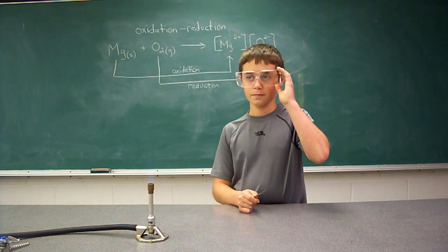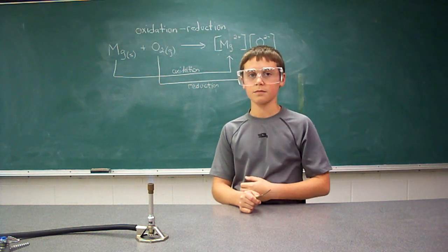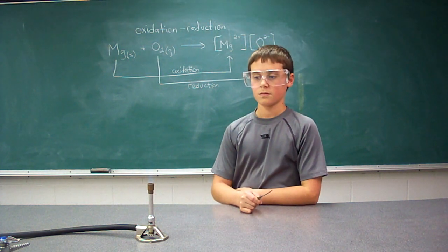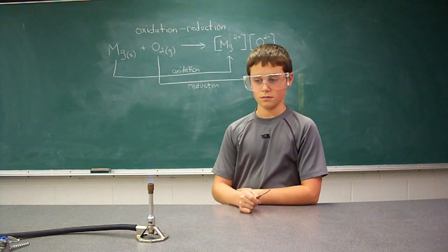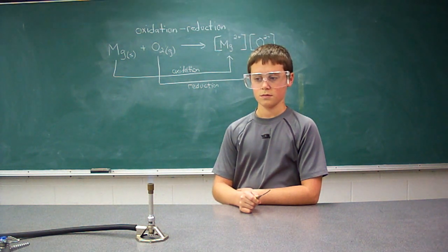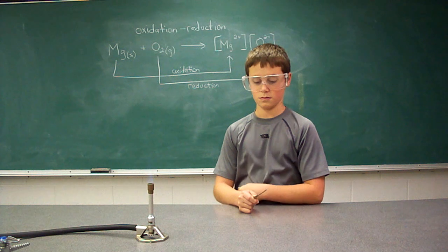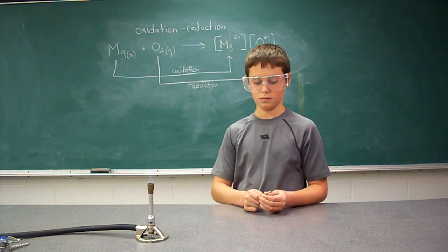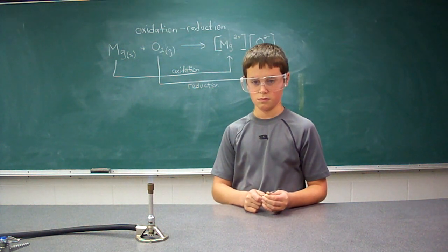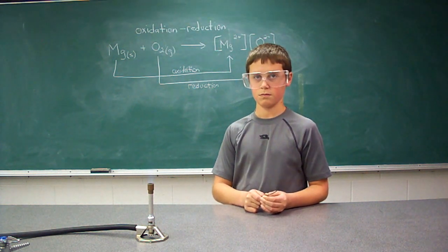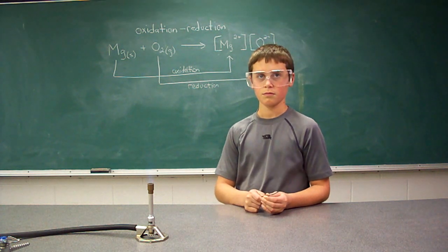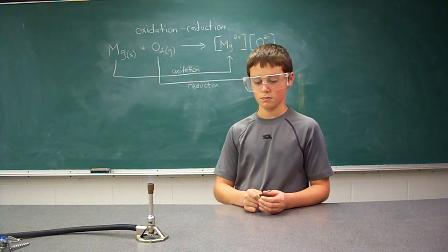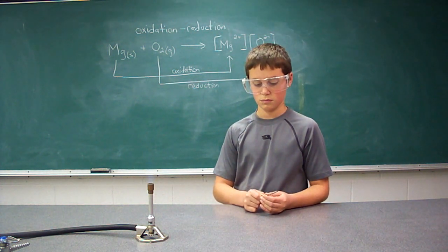Here we are going to demonstrate what's called an oxidation-reduction reaction. During this process, one substance is oxidized — meaning it loses electrons — and the other is reduced — meaning it gains electrons. So during this oxidation-reduction reaction, electrons are transferred from one substance to another.